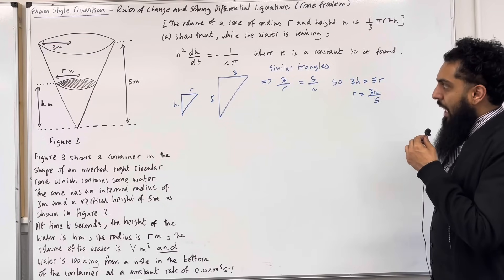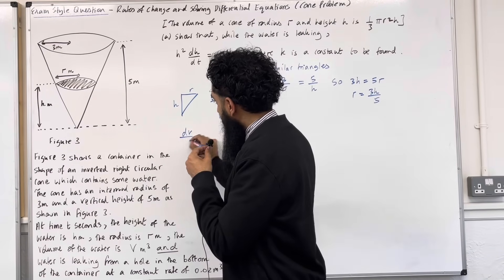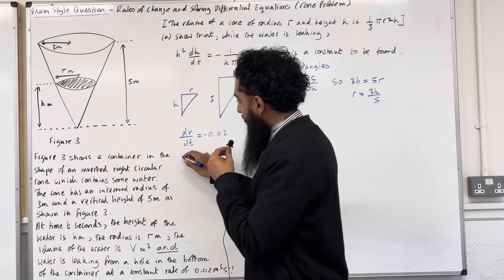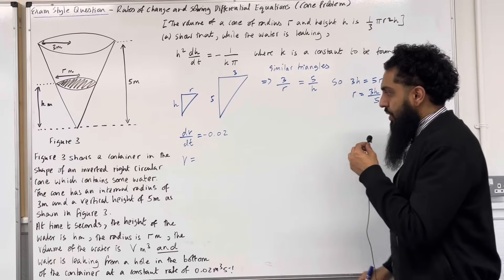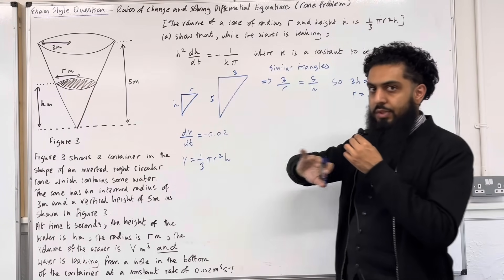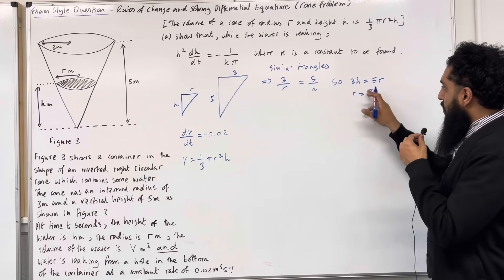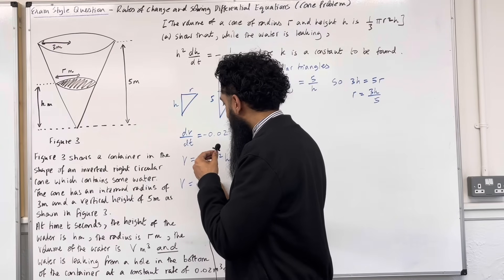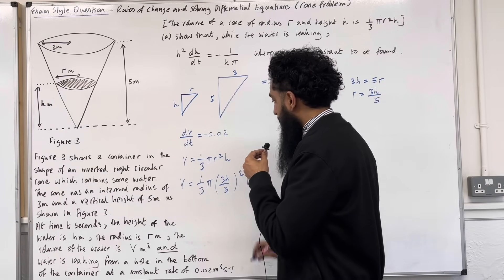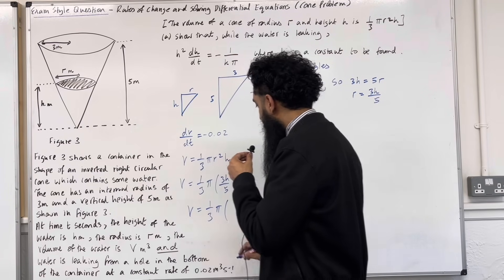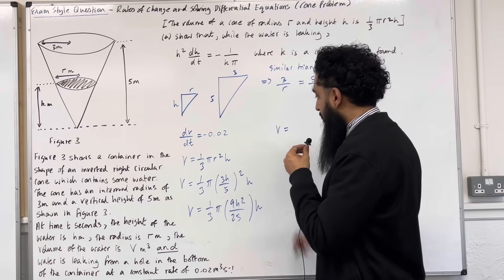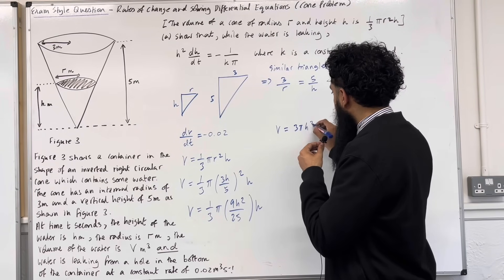We know dV/dt = −0.02, and the volume of a cone is V = one-third π r² h. Since our final differential equation has no radius, we eliminate it by substituting r = 3h/5. So V = one-third π × (3h/5)² × h = one-third π × 9h²/25 × h, which simplifies to V = 3πh³ over 25.